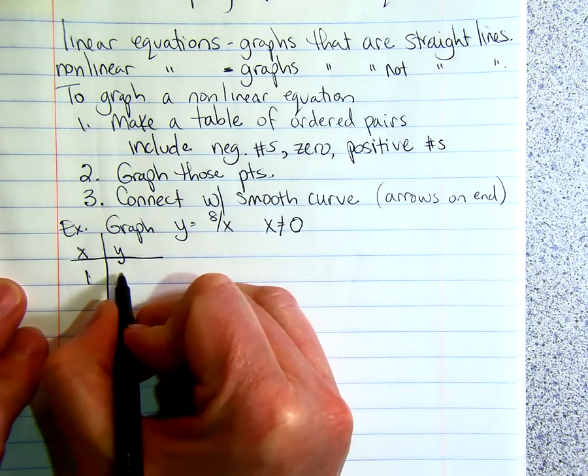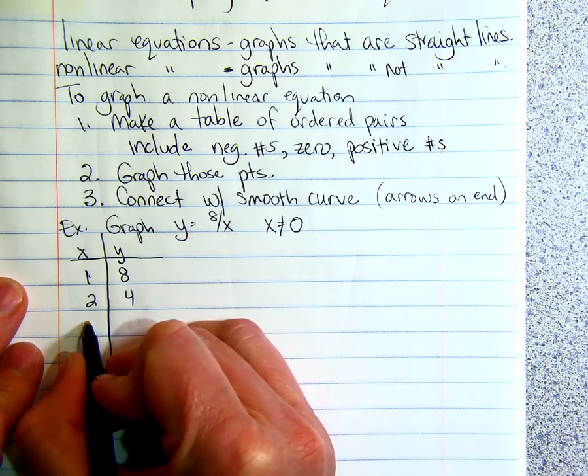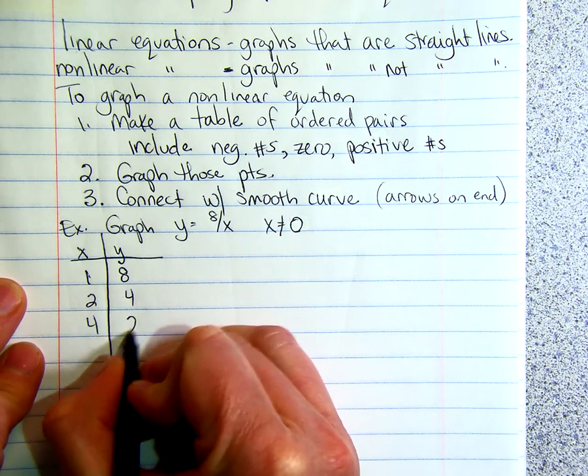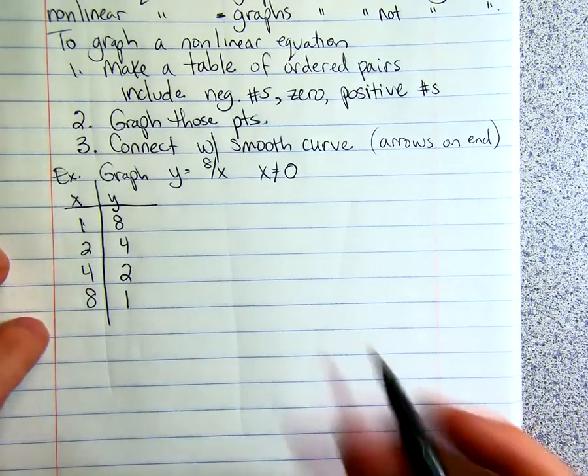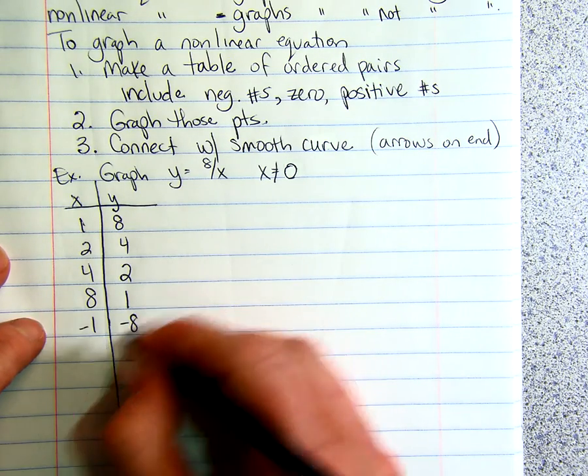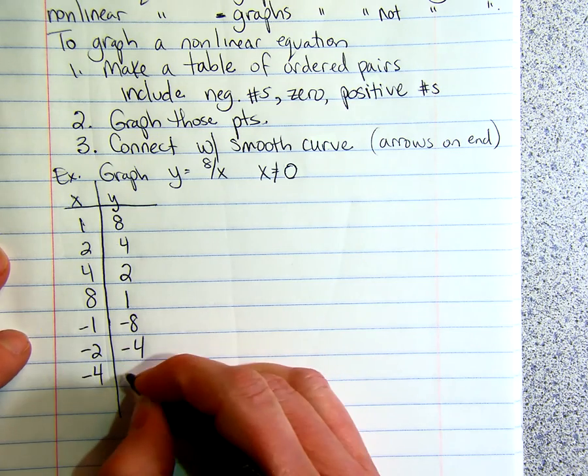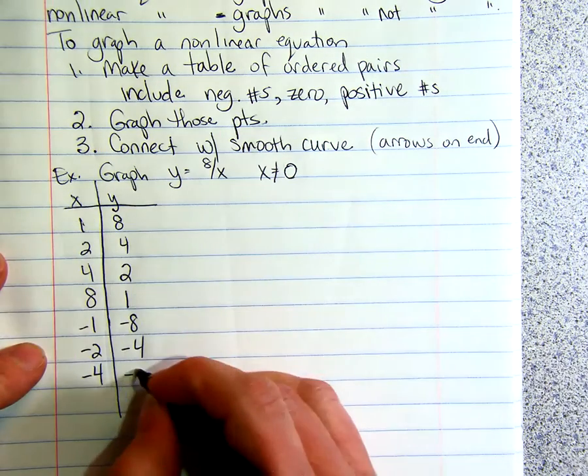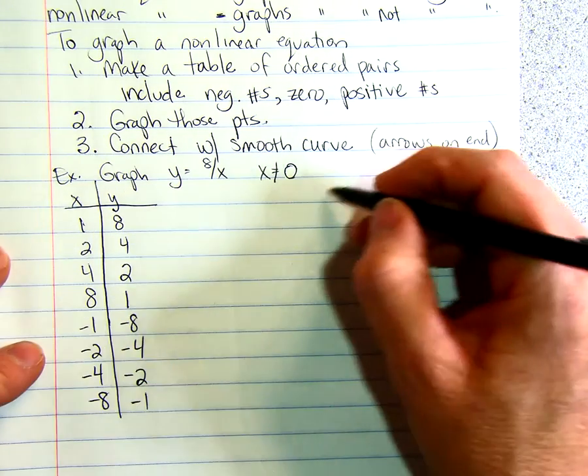When x is 1, y is 8. When x is 2, y is 4. When x is 4, y is 2. And when x is 8, y is 1. Now we can't do 0 because we can't divide by 0, but we can do negative numbers. So if we do negative 1, y is negative 8. Negative 2, y is negative 4. Negative 4, 8 divided by negative 4 is negative 2. Negative 8, 8 divided by negative 8 is negative 1.